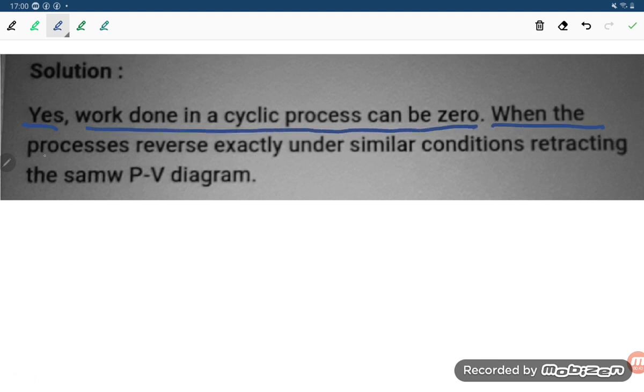When the process reverses exactly under similar conditions, retracting the same P-V diagram. So if similar conditions are there, student, then the work done can be zero. Otherwise, it cannot be zero also.